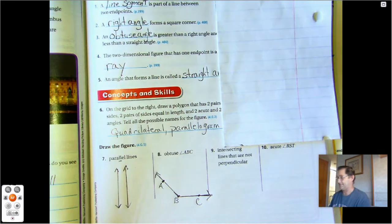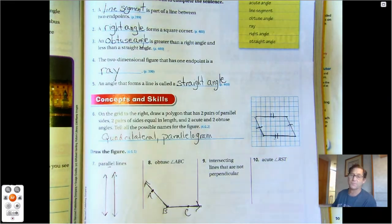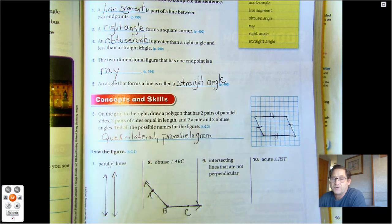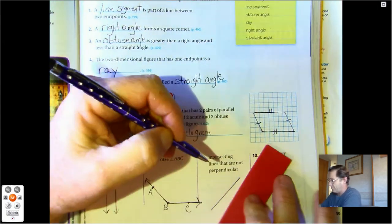Intersecting lines that are not perpendicular. Perpendicular means that it forms a right angle, so we just need two lines that cross but do not form right angles. And it would intersect at that point right there.